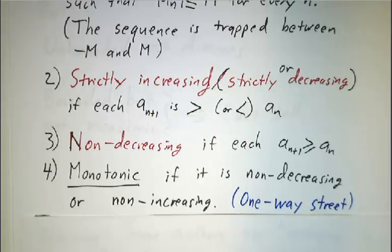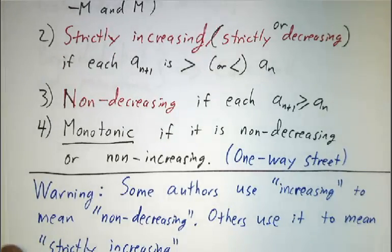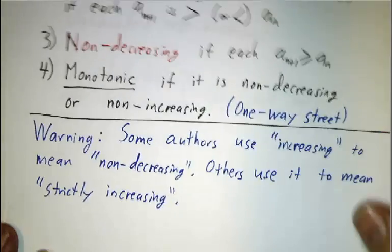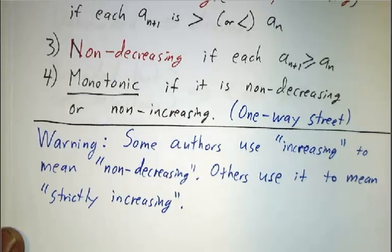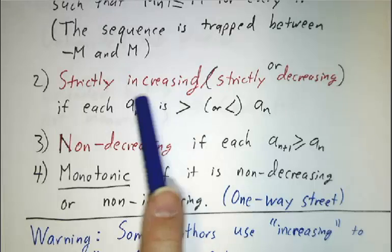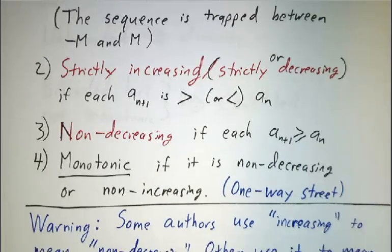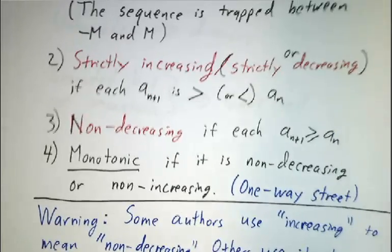Monotonic is an important word. Monotonic means it's either non-decreasing or non-increasing — it's like driving down a one-way street: you always go in one direction, or sometimes you stop, but you can never go backwards. Different authors use the words 'increasing' and 'decreasing' in different ways, so I prefer to use 'strictly increasing' when each term is bigger than the one before, and 'non-decreasing' when each term is at least as big as the one before. I try to avoid the word 'increasing' because it's a little ambiguous.